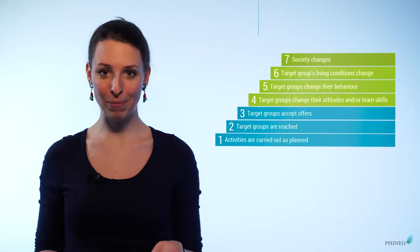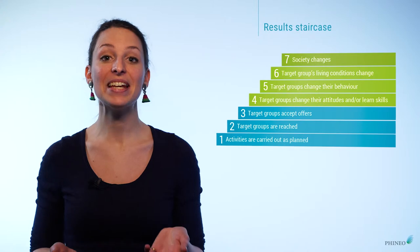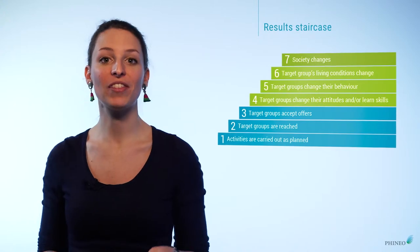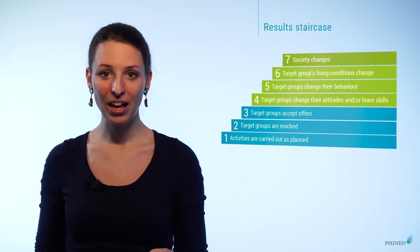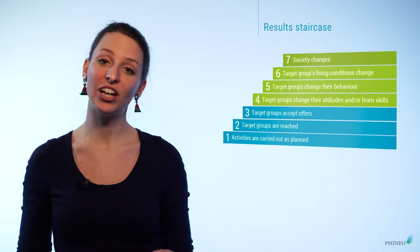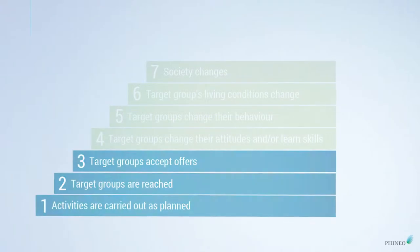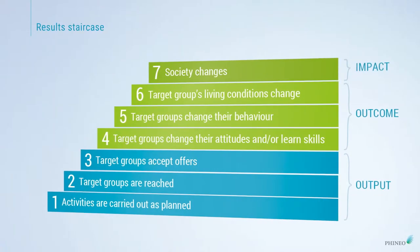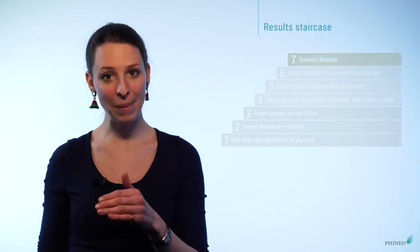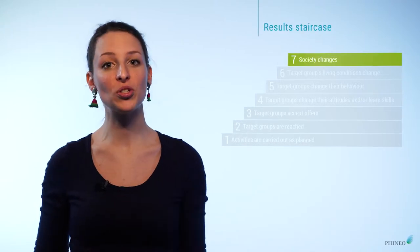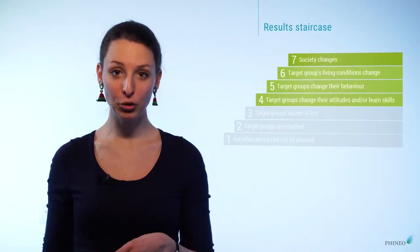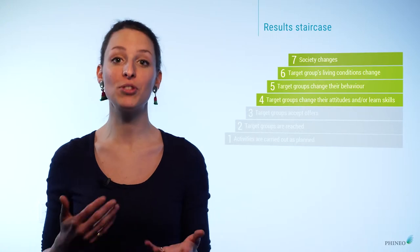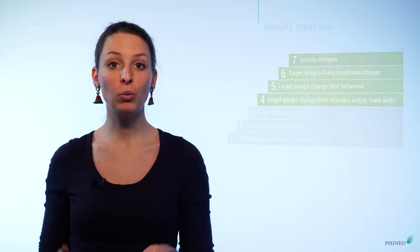There are different levels of social impact, and these are illustrated using the Phenial Results Staircase. So let's have a look at the staircase. It's divided into three parts: the outputs, the outcomes, and the impacts. We distinguish between impacts being results at the societal level, and outcomes being the results within the target group.